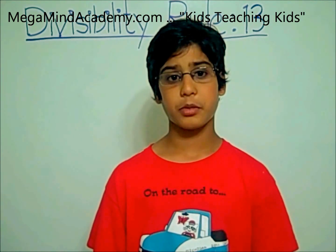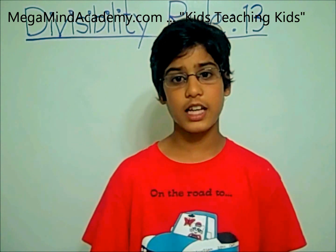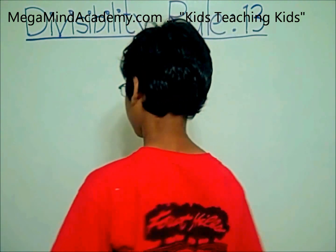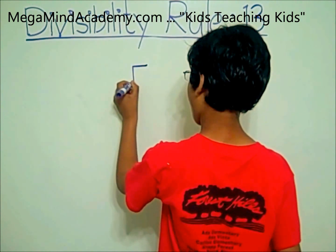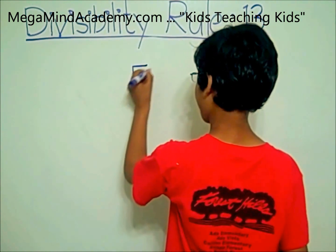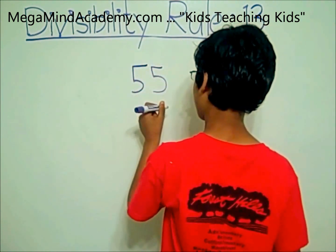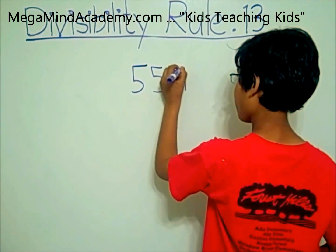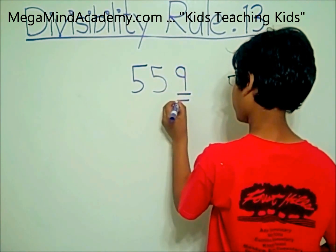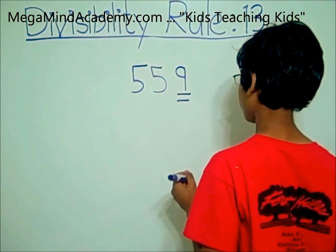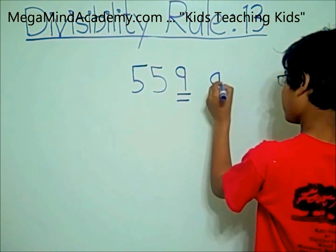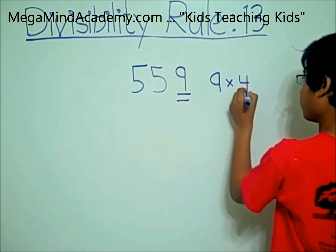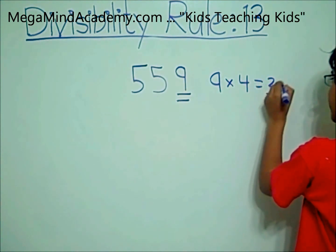Let's look at an example. Let's say our number is 559. 9 is the last digit, so you do 9 times 4, which equals 36.